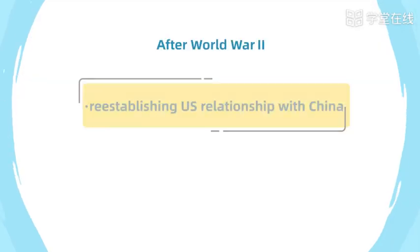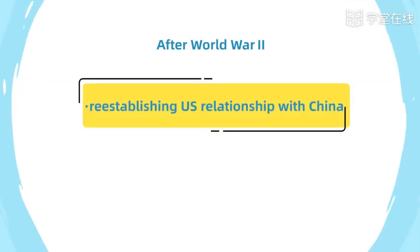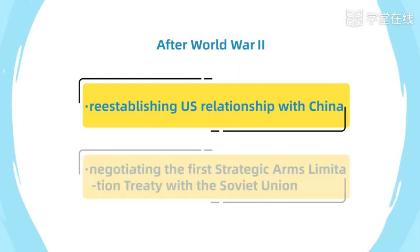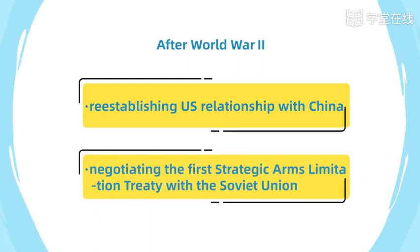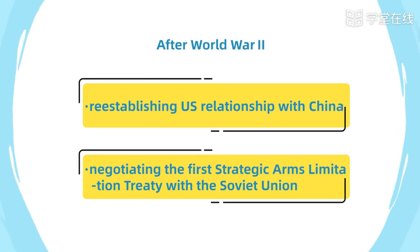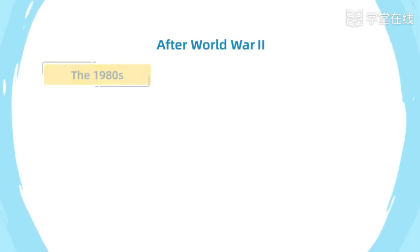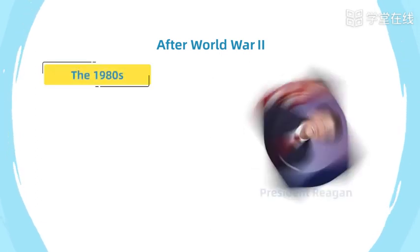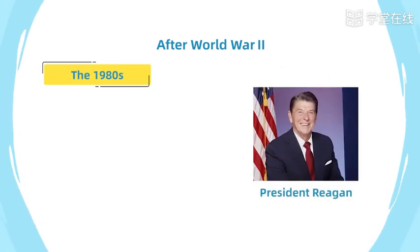President Nixon achieved two diplomatic breakthroughs: re-establishing U.S. relations with China and negotiating the first Strategic Arms Limitation Treaty with the Soviet Union.